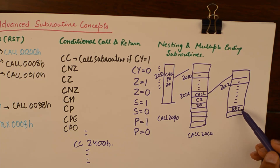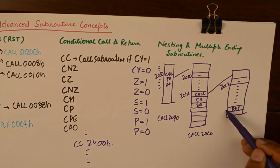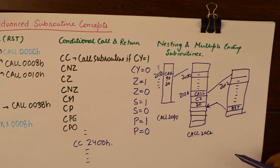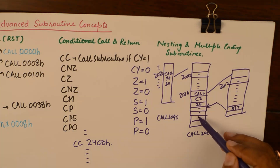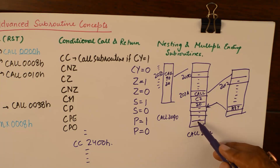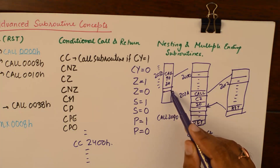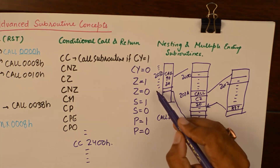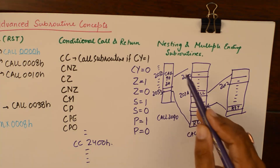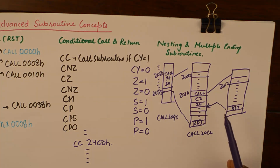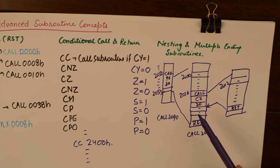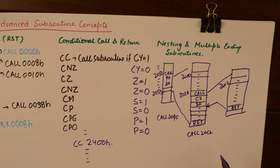Once the inner subroutine finishes executing it encounters a return instruction that takes us back to the outer subroutine. Then subroutine number 1 starts executing and when it encounters a return it goes back to the main program — at location 2053, as discussed in the previous tutorial.